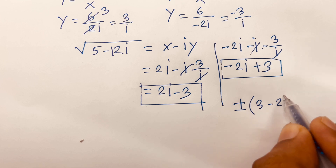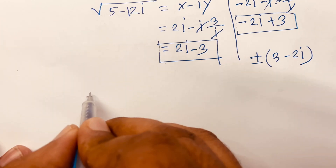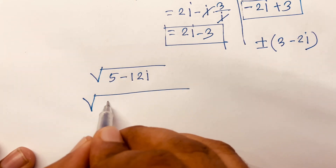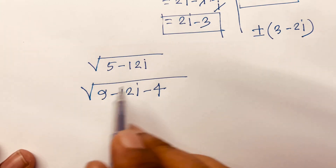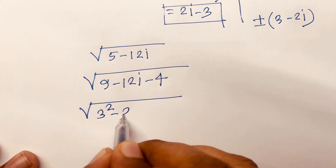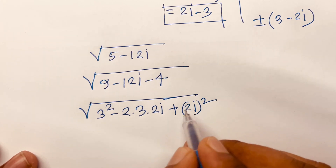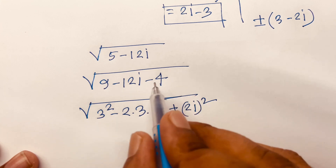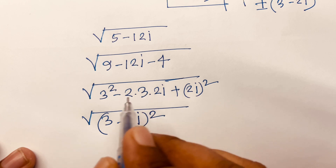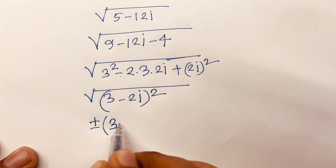Now I solve this question using a second method. The question is square root of (5 minus 12i). I rewrite it as square root of (9 minus 12i minus 4), since 9 minus 4 equals 5. Then square root of (3 squared minus 2 times 3 times 2i plus (2i) squared), because 2 squared times i squared equals 4 times minus 1 equals minus 4. This is square root of (3 minus 2i) squared, so the answer is plus or minus (3 minus 2i).